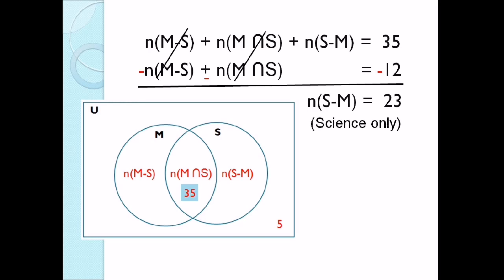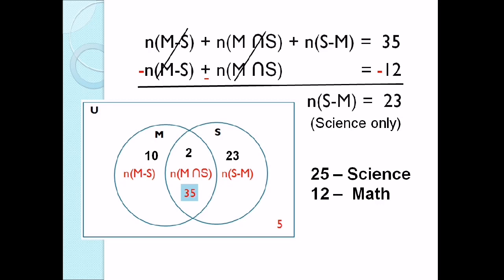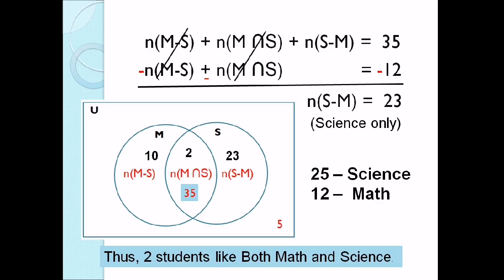Equals to 35 minus 12, that is 23. So 23 yung science only. So ilalagay natin siya doon sa may circle. Since 25 students like science, so ilan yung ilalagay natin sa gitna? We just subtract: 25 minus 23, so dalawa. So 23 yung pumili ng science only at dalawa yung pumili na gusto yung science gusto rin ng math. So ganon din naman sa math: 12 yung math, so 12 minus 10 — therefore 10 lang yung pumili ng math only. So there are 2 students. Okay, so pag pinag-add natin yung 10 plus 2 plus 23, ang total noon ay 35. So thus, 2 students like both math and science.